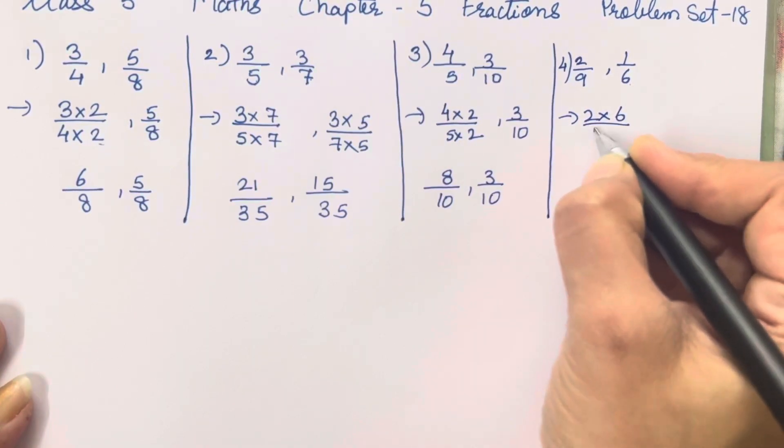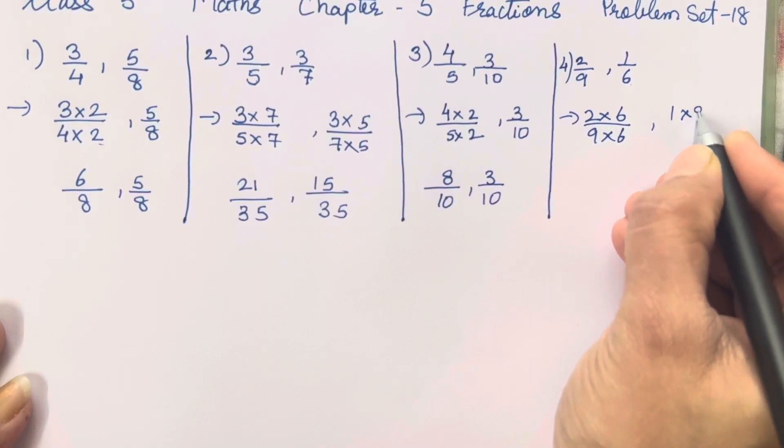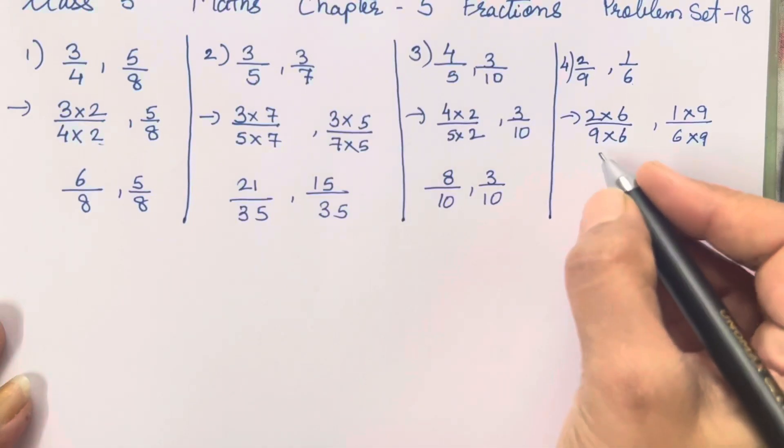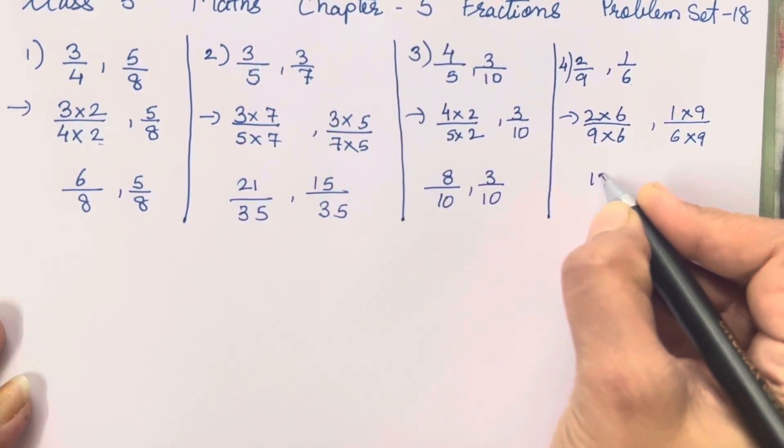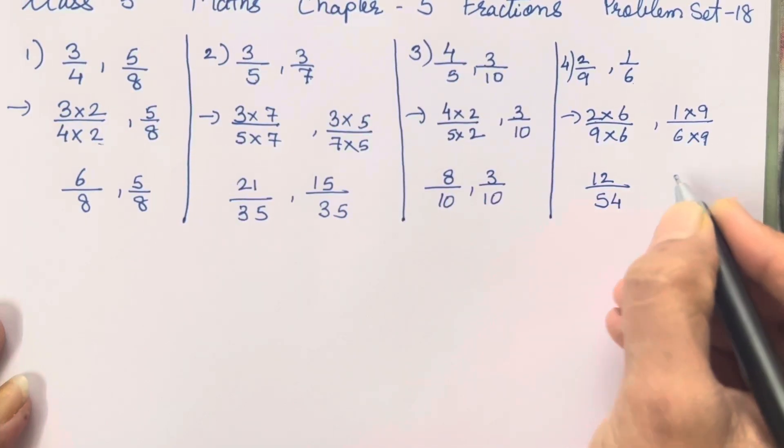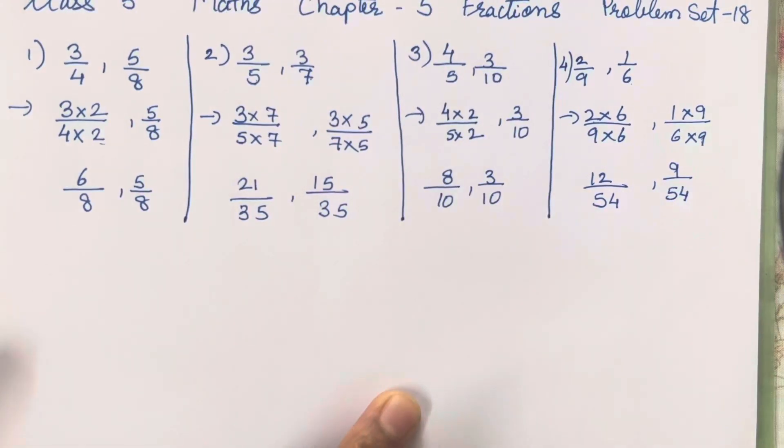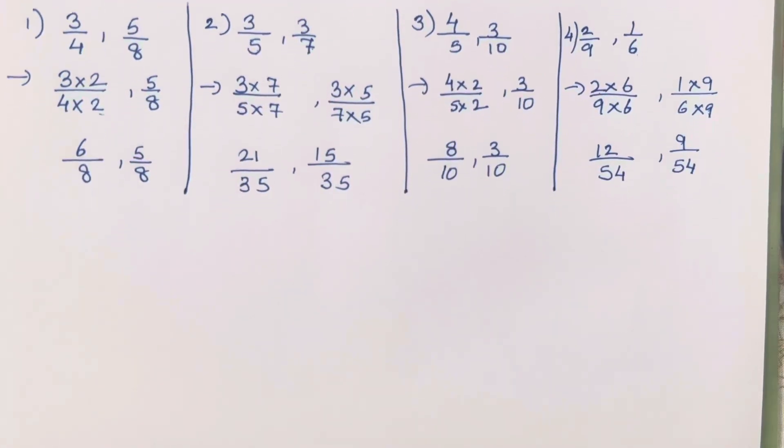So 2 into 6, 9 into 6. Same over here also, 1 into 9, 6 into 9. 6 nines are and 9 sixes will give you the same answer. So 2 6s are 12, 6 9s or 9 6s are 54. 9 ones are 9 and 54. So these are supposed to be like fractions.